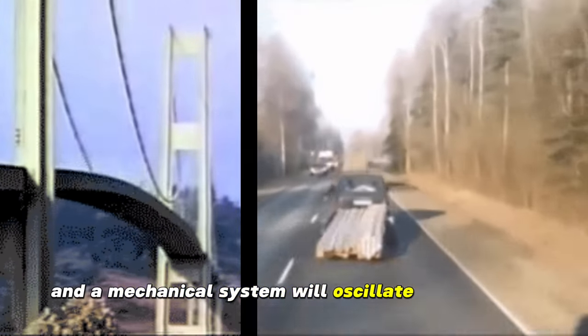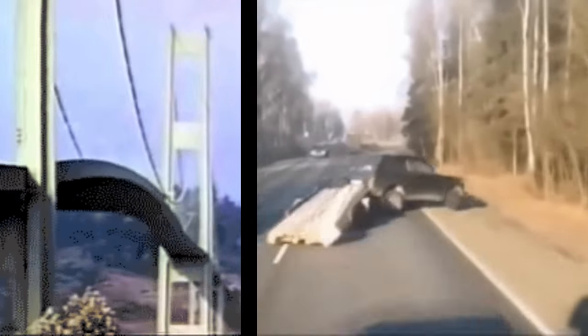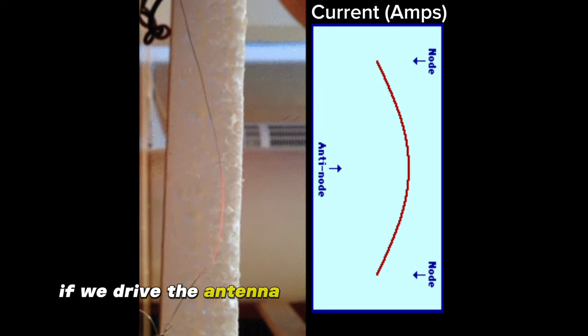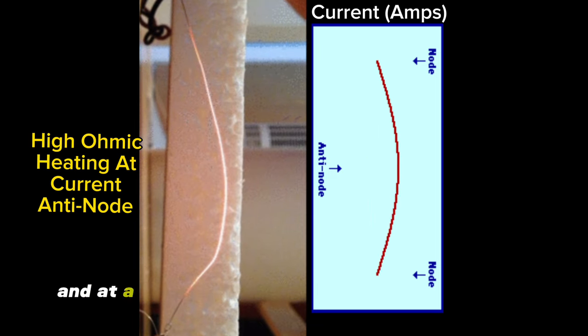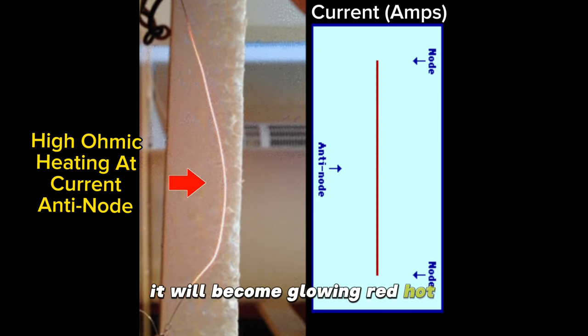Just like a wine glass driven at its resonant frequency shatters, and a mechanical system will oscillate until failure, if we drive the antenna at its resonant frequency at a rate faster than it can dissipate the heat, it will become glowing red hot.